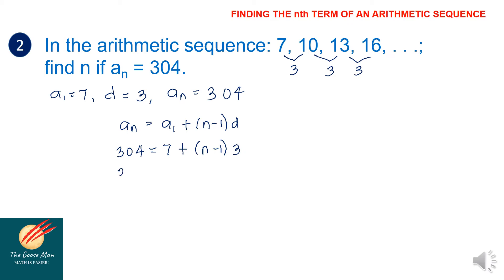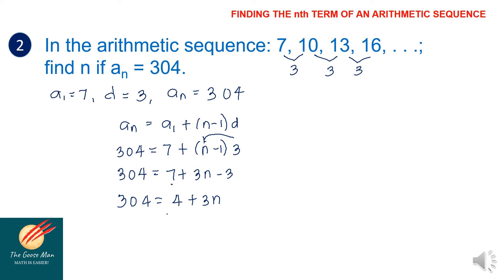Simplifying: 304 equals 7 plus 3n minus 3. Combining constants, 304 equals 4 plus 3n. Subtracting 4 from both sides gives 300 equals 3n.